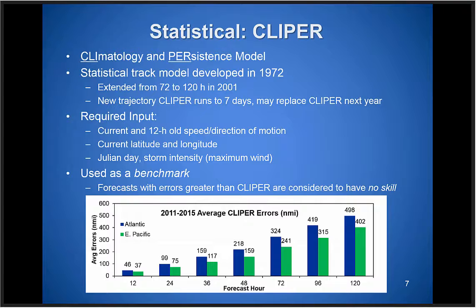This image at the bottom shows average CLIPER model errors in the Atlantic and East Pacific over the last five years, 2011 to 2015. The East Pacific is a much simpler basin for track forecasting — most storms move at a very climatological heading like 285 degrees at 11 knots south of the ridge. On average, East Pacific cyclone tracks are much easier to forecast than Atlantic ones. There's much more mid-latitude influence in the Atlantic basin, with many more different possibilities in terms of track, which is why average CLIPER errors are larger there.